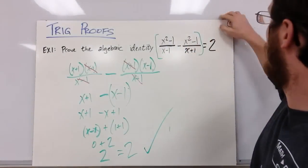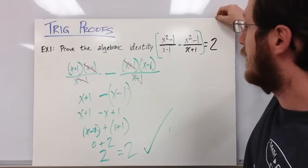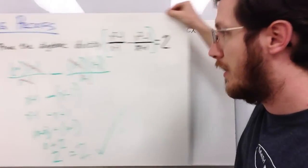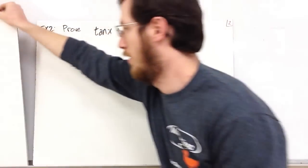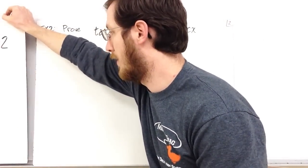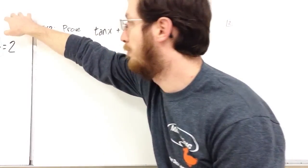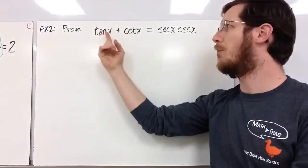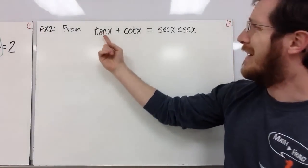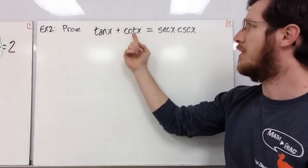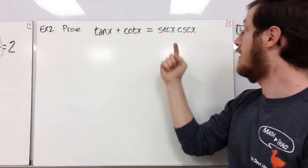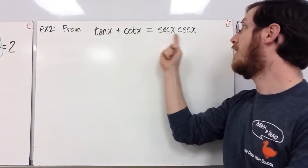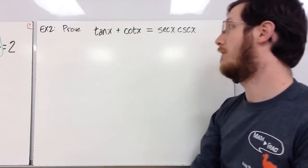Now let's look at a similar identity but with trigonometry inside. Example two: prove that tan(x) + cot(x) = sec(x)csc(x).